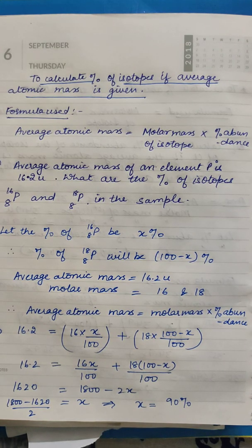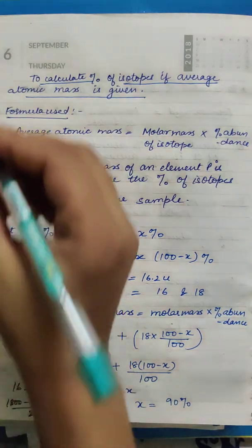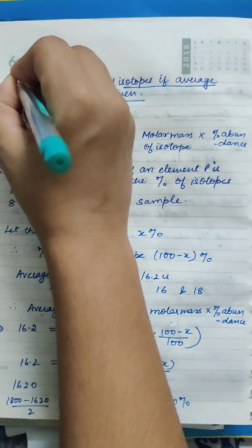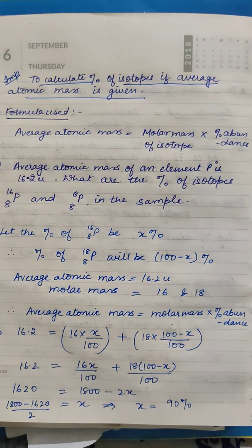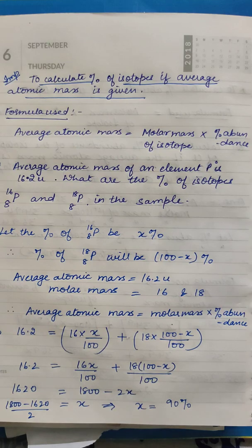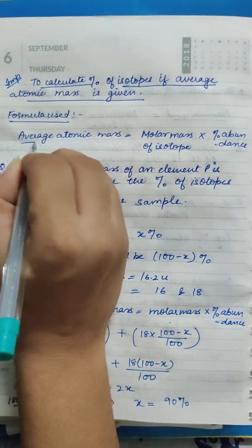In the last video you learned how to calculate the average atomic mass. Now we will learn how to calculate the percentage of isotopes if average atomic mass is given to you in the question. This is an important concept. The formula which is used remains the same — the same formula we used to calculate average atomic mass.